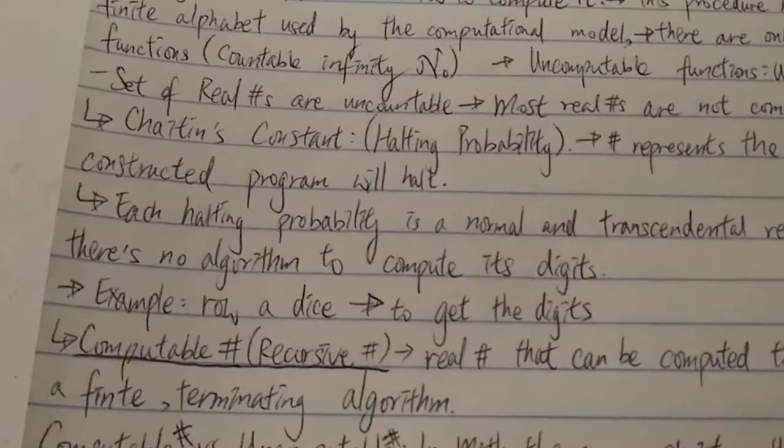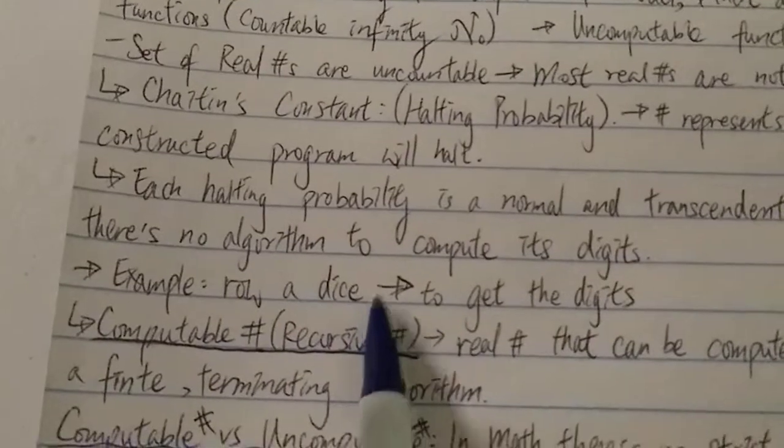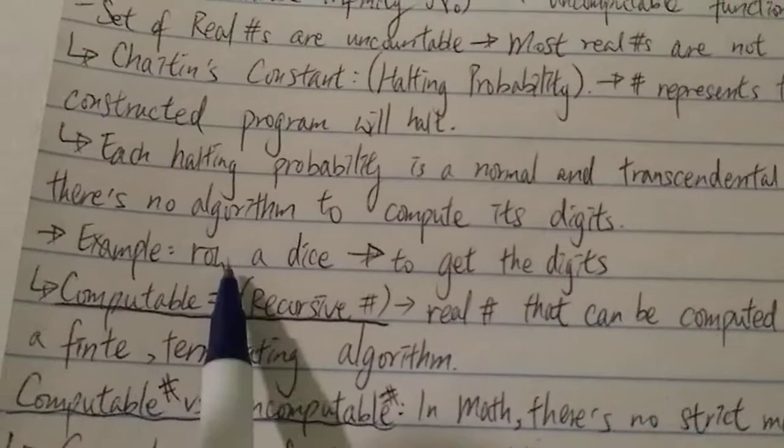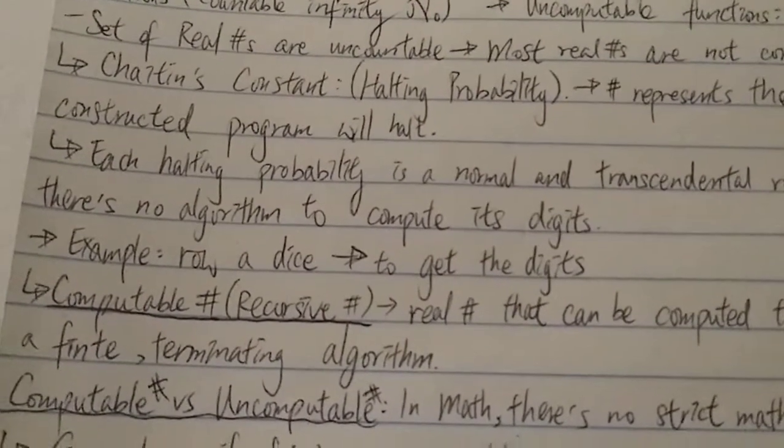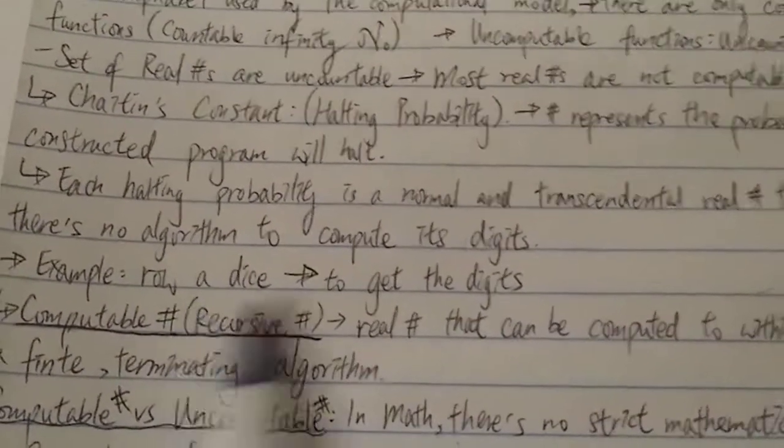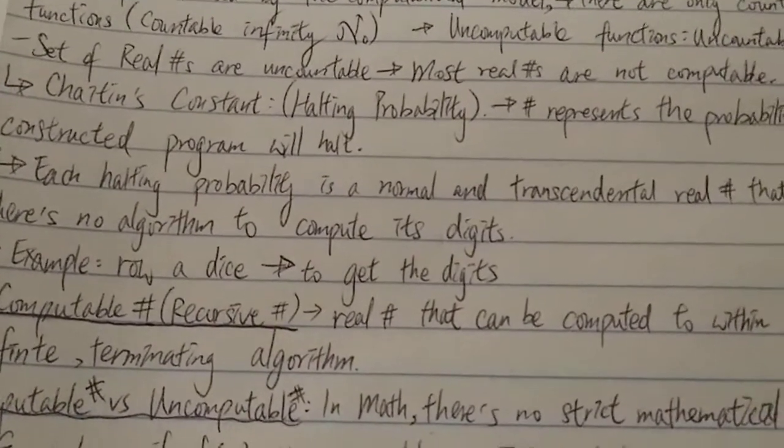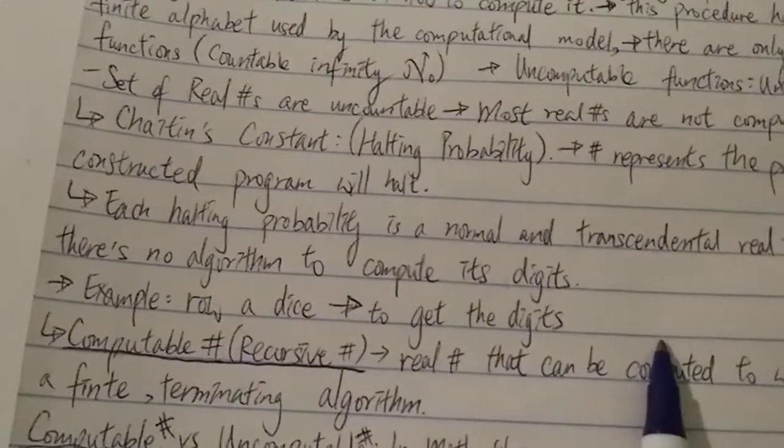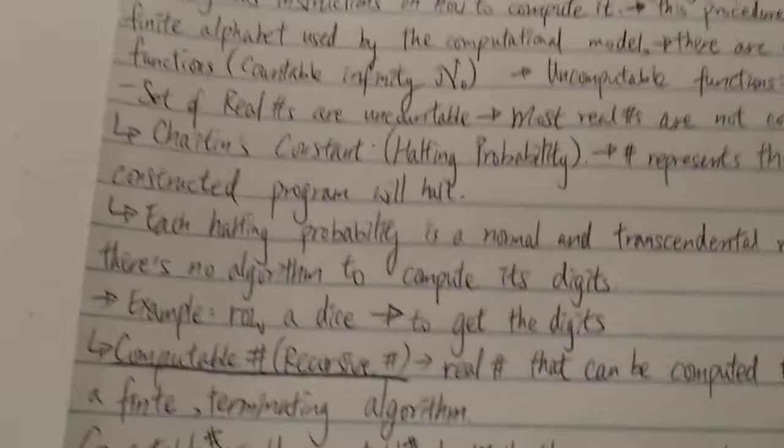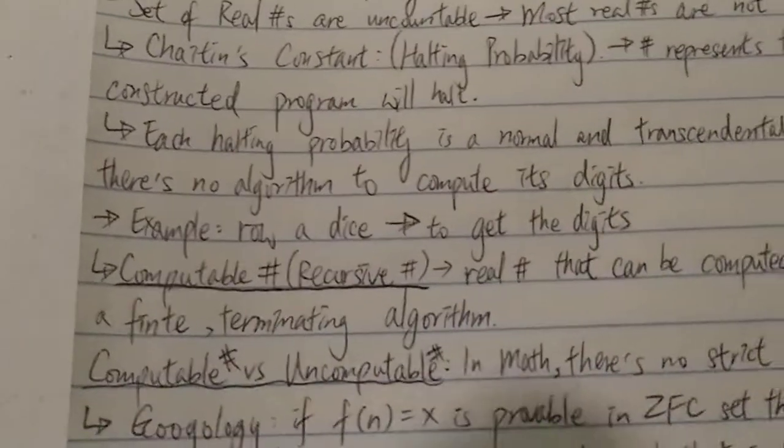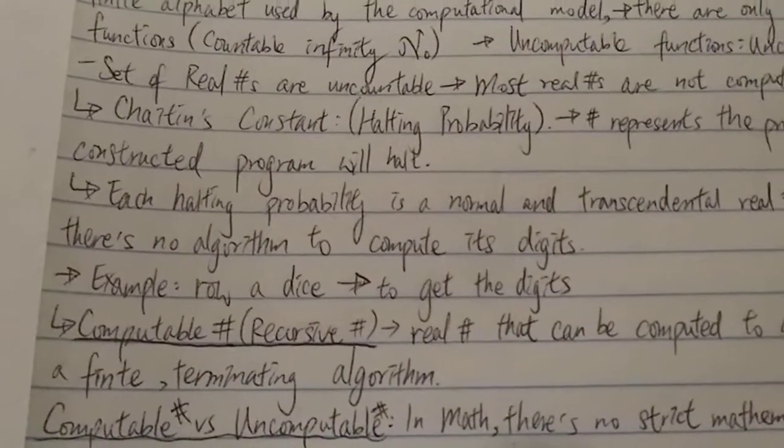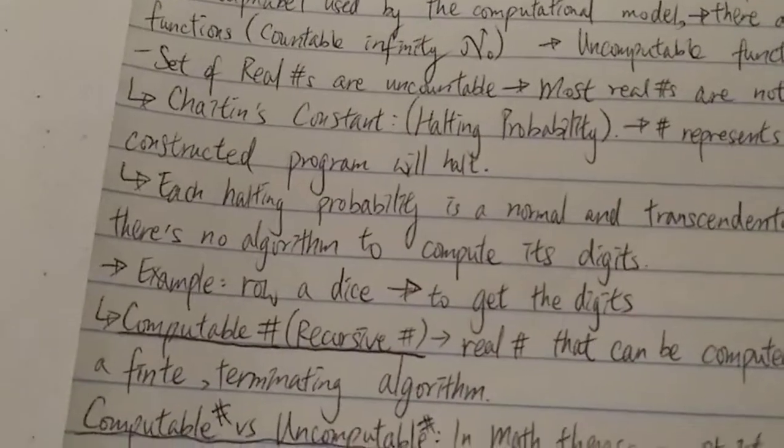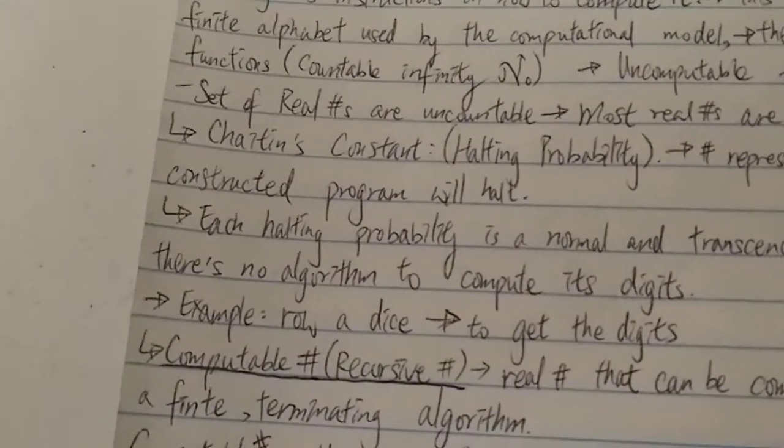Another way to understand an uncomputable number or function is to roll a die. If the only way to get the digits of a number is by rolling a die - a die has six choices: one, two, three, four, five, six - and let's say your number has an infinite number of digits, it's a decimal number. If each digit is obtained by rolling a dice for each digit, then obviously that would be an uncomputable number. There's no algorithm to calculate it. Everything you have to work out by rolling a dice. So that's another layman way to understand an uncomputable number.